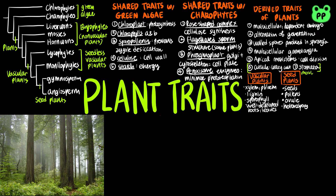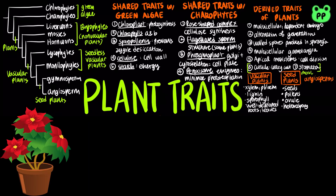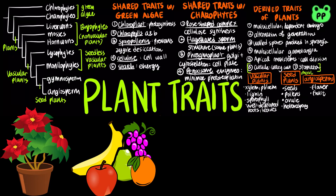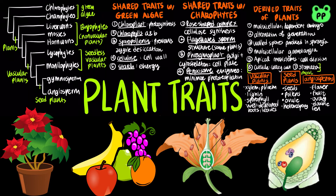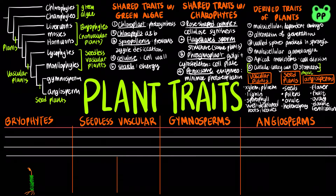More details about plant reproduction and life cycle will be covered in a future video. Derived traits of angiosperms include flower, which is a structure specialized for sexual reproduction. Fruits contain a mature ovary and help in seed dispersal. Ovary is found in the carpel of a flower and contains several ovules. Lastly, double fertilization, in which one sperm fertilizes the egg forming a diploid zygote, and another sperm combines with two nuclei and forms the food-storing endosperm.